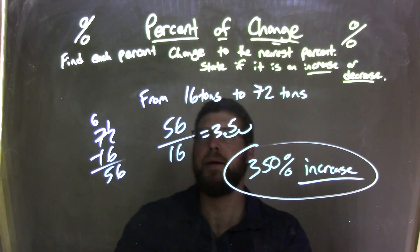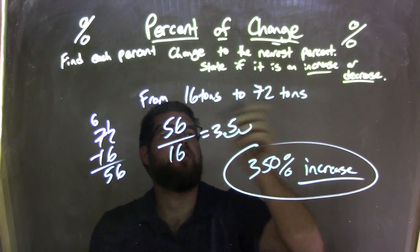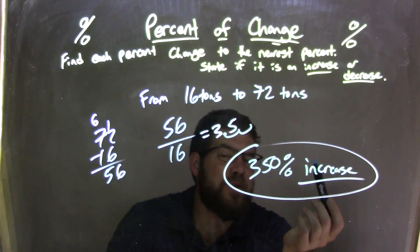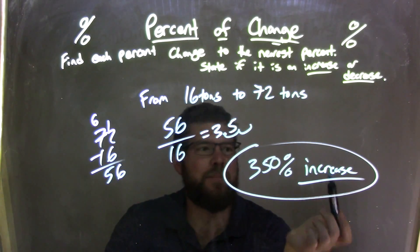So let's recap. We're going from 16 tons from Tennessee Ernest Ford to 72 tons. We need to find what is that increase or decrease. That is an increase right there.